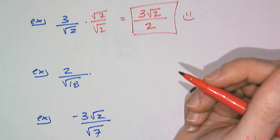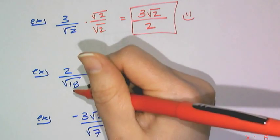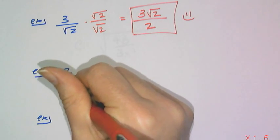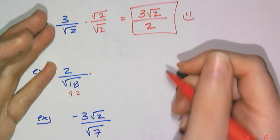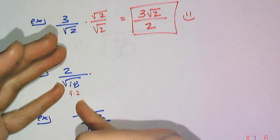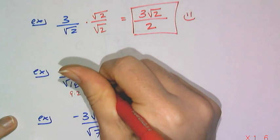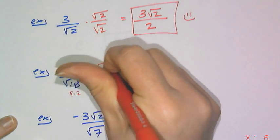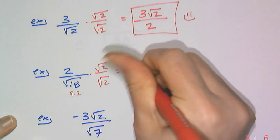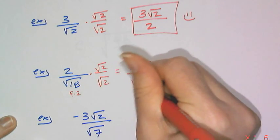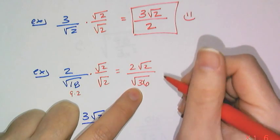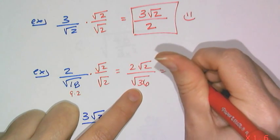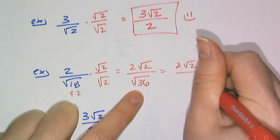I know that 18 is 9 times 2. And it's almost a perfect square. Like the 9 is a perfect square, but the 2 is not. So if I go ahead and multiply that by root 2 over root 2, what I get is 2 root 2 over the square root of 36. And the square root of 36 is a perfect square, and so then I end up with 2 root 2 over 6.